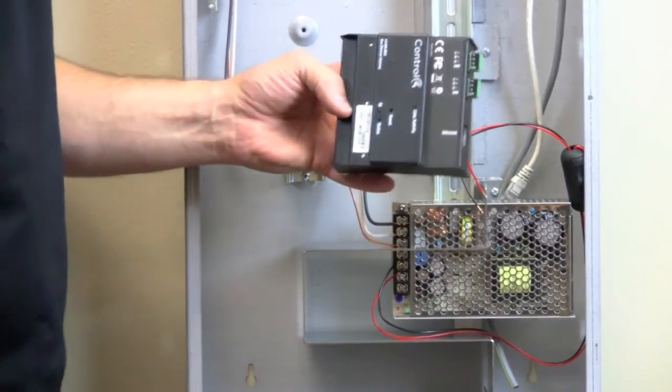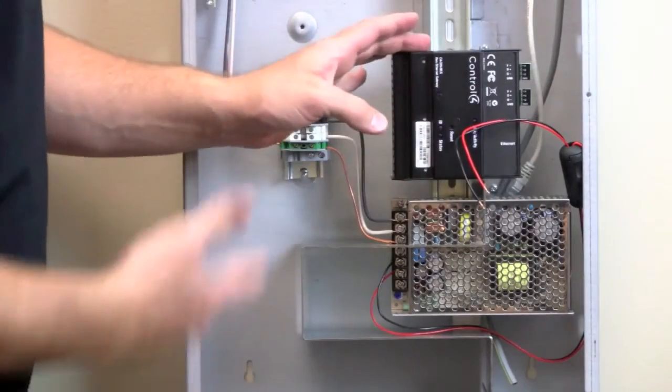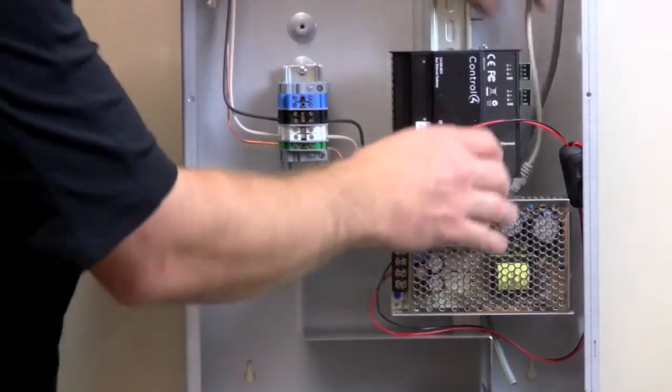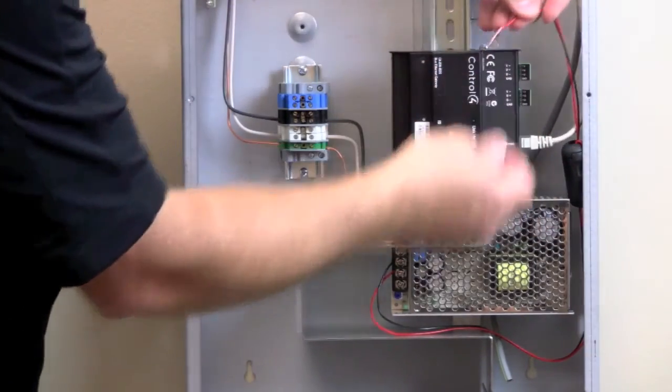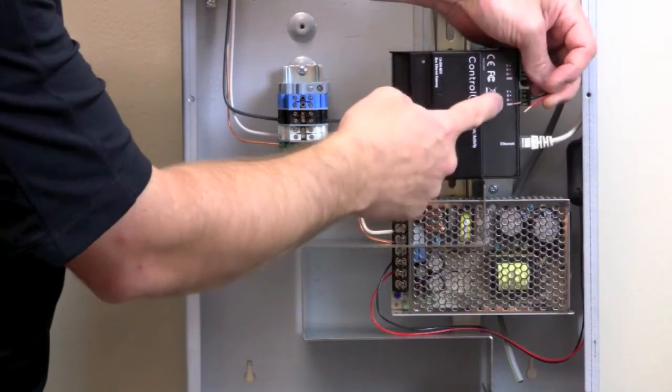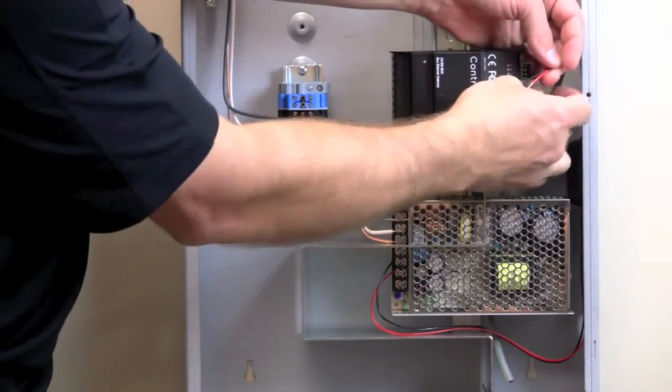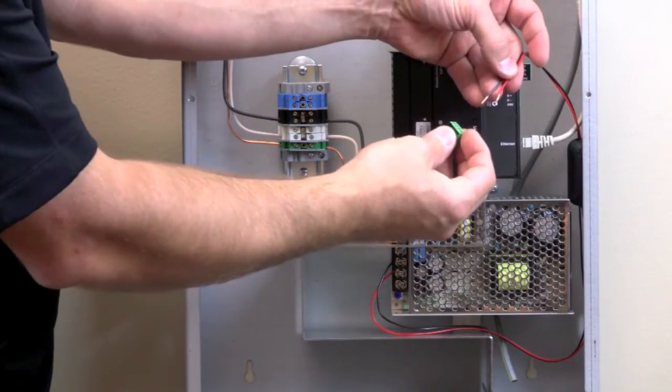Now we're going to mount the bus ethernet gateway by simply clicking on this side and clicking it into place like the rest of the modules. We've got our Cat5 here, let's go ahead and plug that in for communication. And then we're going to take the output of the power supply and connect it to the ground and the voltage plus of the bus ethernet gateway, and then you've powered the bus ethernet gateway.